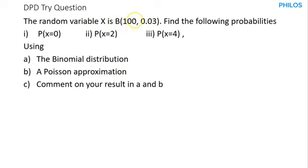The arguments: the 100 represents the number of trials, which is n. And then the 0.03 means the probability of success, which is p.